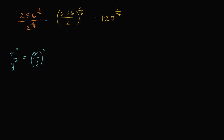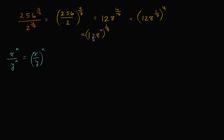Now this might also seem a little bit difficult — how do I raise 128 to a fractional power? We just have to remind ourselves this is the same thing as 128 to the one-seventh power, then raised to the fourth power. We could also view it the other way: 128 to the fourth power, then raised to the one-seventh. But multiplying 128 four times is computationally intensive, and then you'd have to find the seventh root of that, so we don't want to go that way.